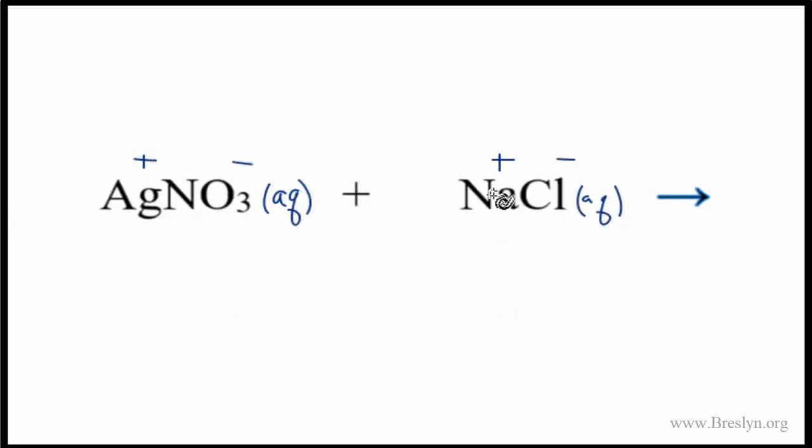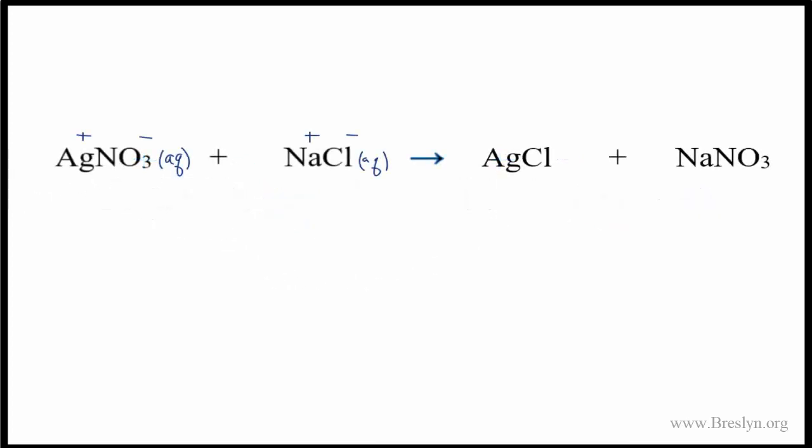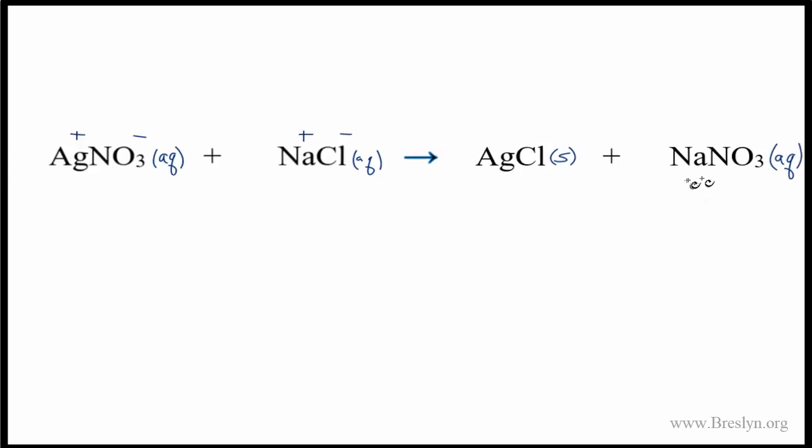This is a double displacement reaction. The plus will go with the minus here, and this plus will go with this minus. With net ionic equations, you're normally given that the reactants are aqueous so the reaction can take place, but you have to figure out whether the products will be aqueous, liquids, solids, or gases. Looking at a solubility chart, AgCl is insoluble so it's a solid, and NaNO3 is soluble so it's aqueous.